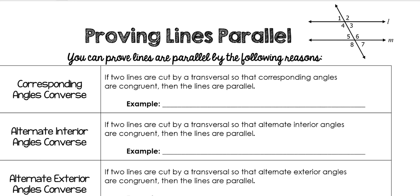You will have to understand what the different postulates and things are so that we can do that. Well, they're actually theorems. But you will have to know what they are in order to write how you know you can set the problem up that way. So, the corresponding angles converse, or the converse of corresponding angles — it's normally called the converse of corresponding angles — says that if you know that the angles are corresponding, then you know that the lines are parallel.